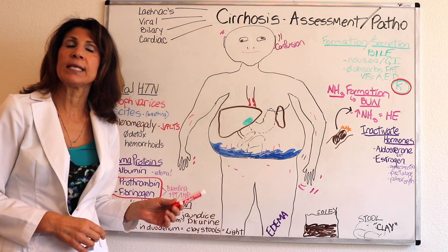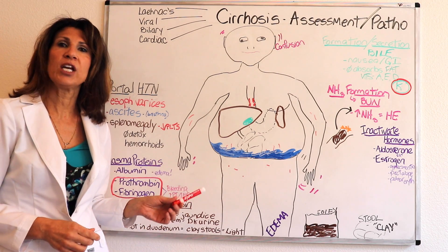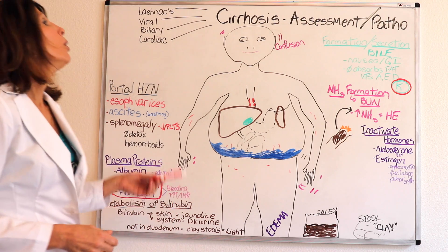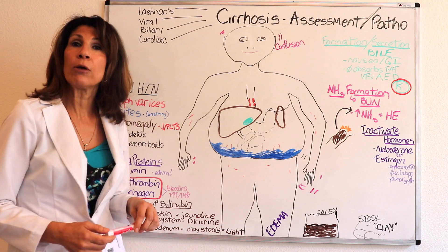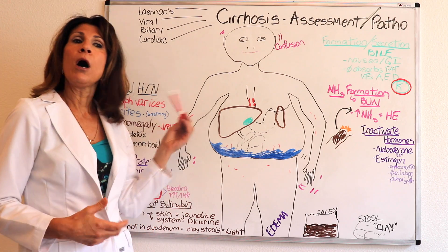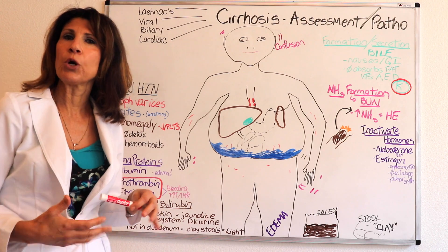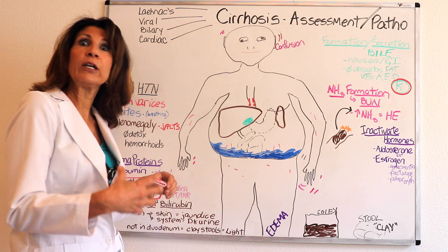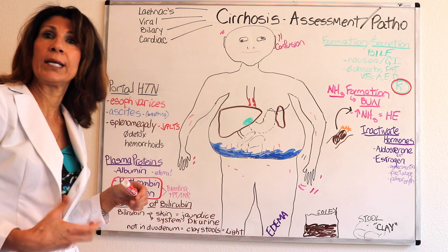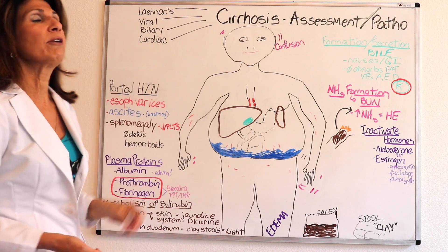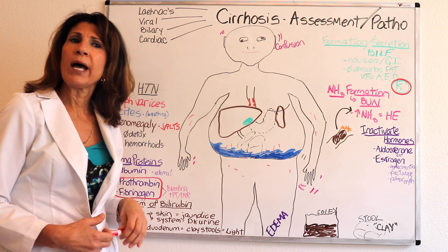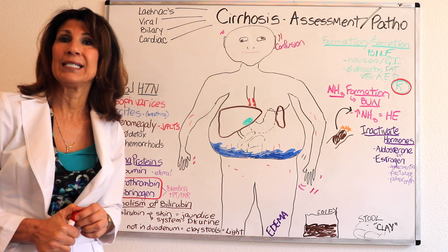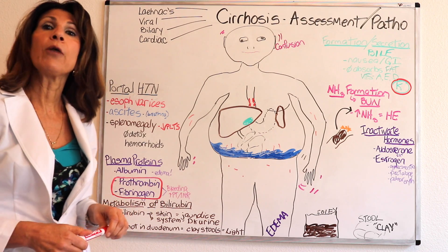This video is about the assessment of the liver failure patient and the pathophysiologic basis for why they appear the way they do. It's not just alcoholic cirrhosis that causes it — there are other underlying reasons, like cardiac cirrhosis secondary to right heart failure applying pressure to that organ, biliary cirrhosis secondary to problems with the gallbladder and gallstones, and viral cirrhosis secondary to hepatitis.